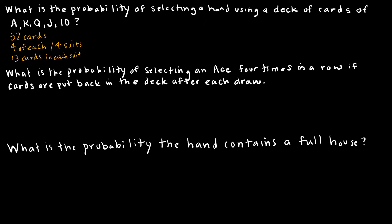Let's talk about two different ways to find this probability. One way to think about it: there are four cards in the deck that are aces out of 52 cards. Then I select a king — there are four kings but only 51 cards left because I already chose an ace. This is the conditional probability. Assuming I've chosen an ace and a king, there are 50 cards left and four are queens, etc. This seems like a good strategy, but the problem is it assumes that order matters.